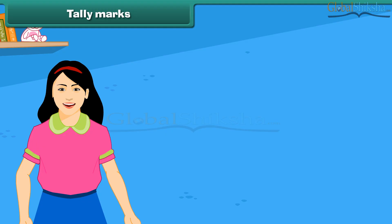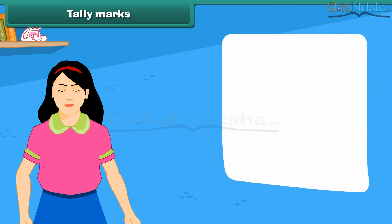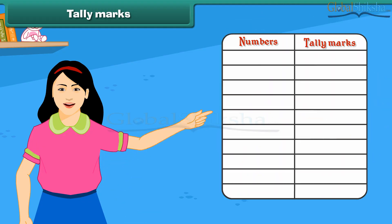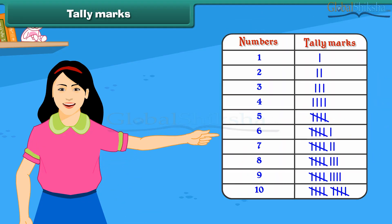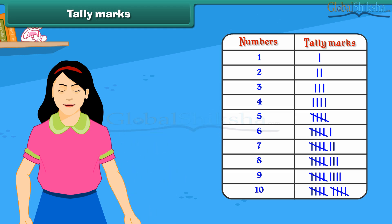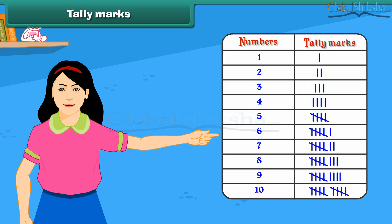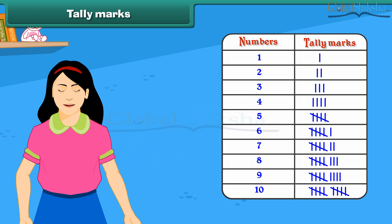Tally marks are one of the easiest and quickest methods used for data handling. A tally mark is counting the objects or activity in groups of 5. A single vertical line represents a single object.